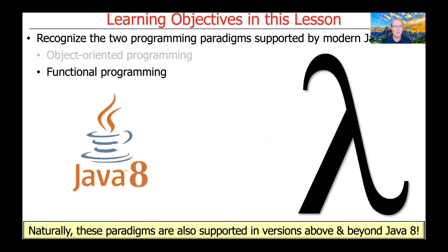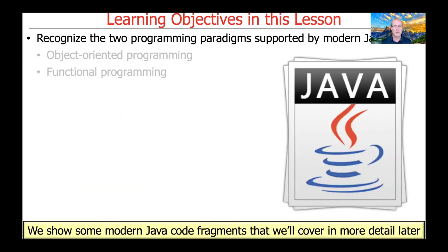Instead, what we're going to focus on is Java's support for functional programming, which came in roughly the 2014 time frame with Java 8 and the versions of Java that have come since that point. We'll be showing various modern Java code fragments as we walk through this and other lessons in this course.